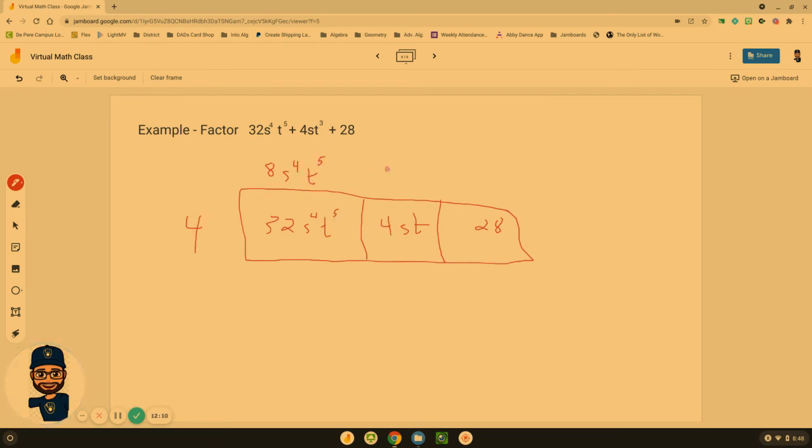4 times what is 4? That's 1. The S-T has to come out so that if I multiply this by 4, we get that. 4 times what is 28? That would be 7. 4 is the GCF, so it goes out front. 8S to the 4th T to the 5th, plus 1ST, which looks like first place. 1ST plus 7.